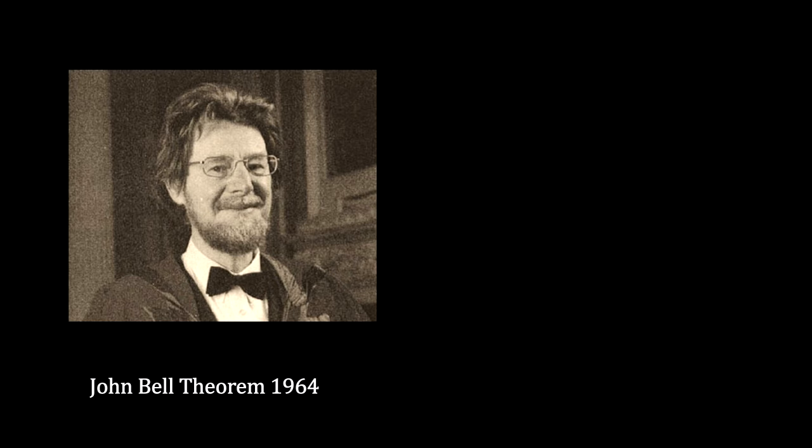In 1964, an Irish physicist, John Bell, published a mathematical paper proposing a way to test for hidden variables. His work is called Bell's Theorem, or Bell's Inequalities.